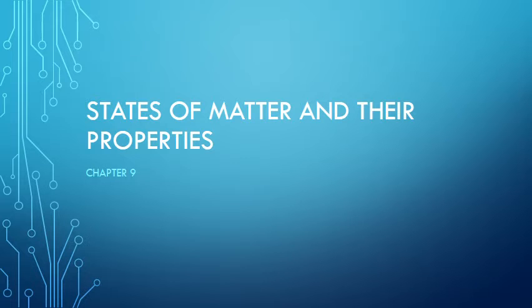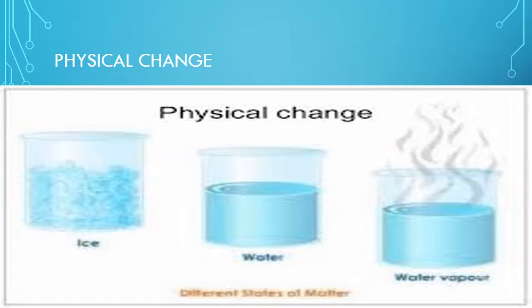We are learning chapter 9, that is states of matter and their properties. In this chapter we have learned about the different forms of matter like solid, liquid, and gas, and also their examples. We have also learned how changes occur between states — how solid converts to liquid, liquid to gas, and gas back to liquid.